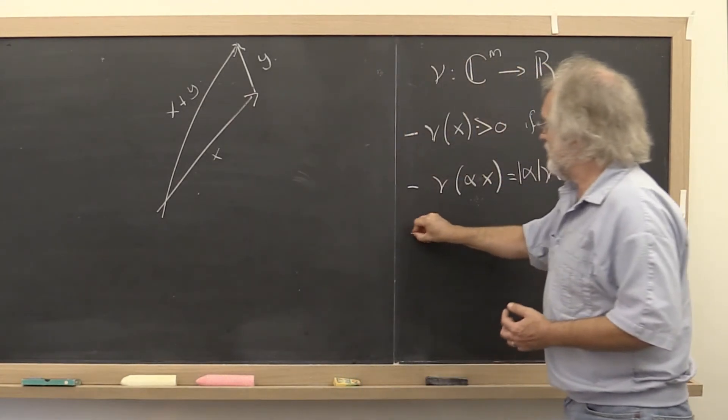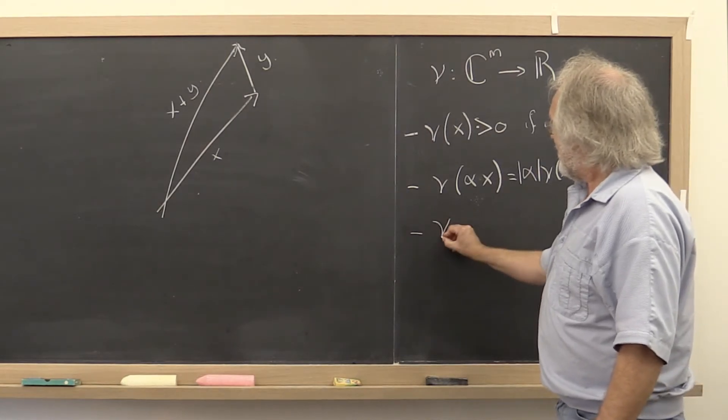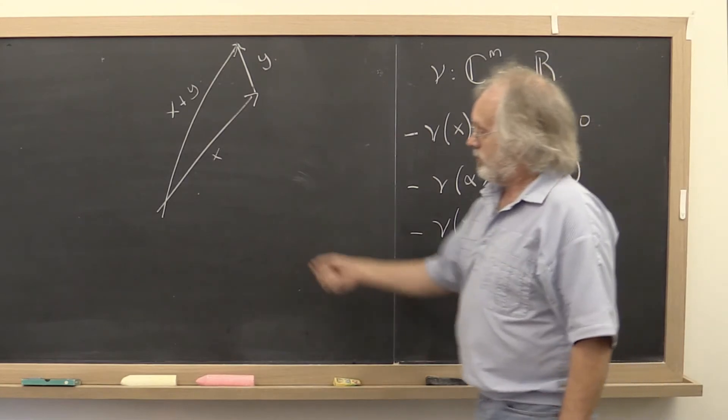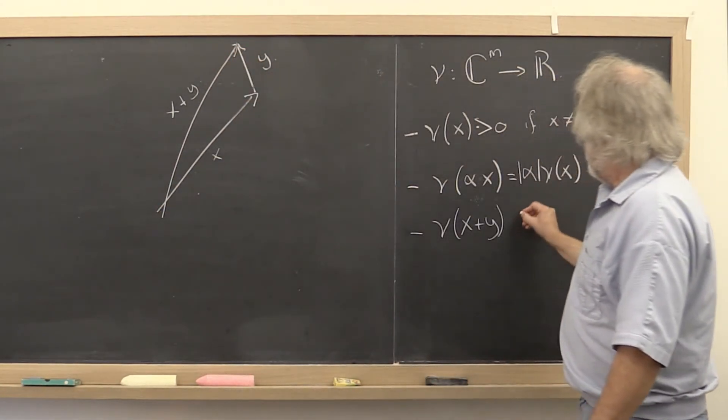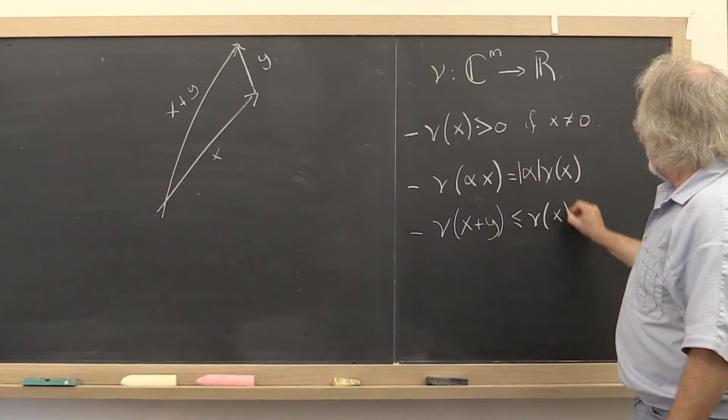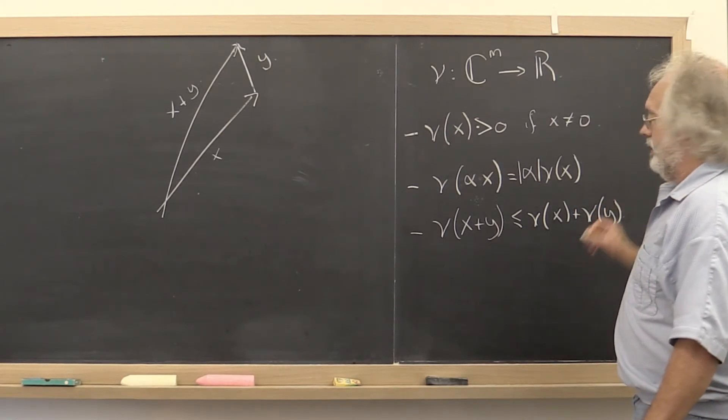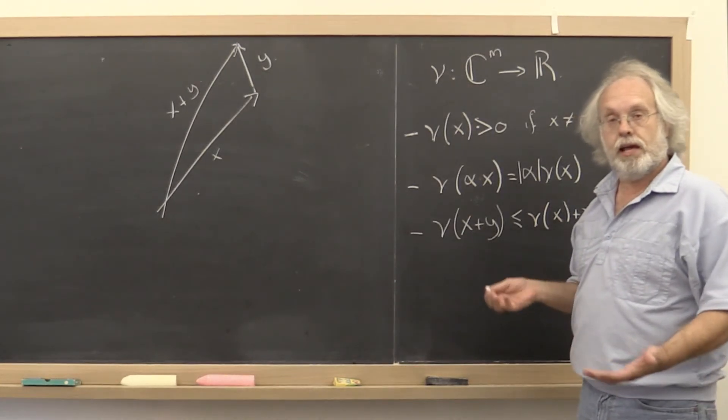So the third condition that makes this function a norm is that the size of x plus y, the direct route from here to here, is no greater than the length of x plus the length of y. And that we saw before is the triangle inequality.